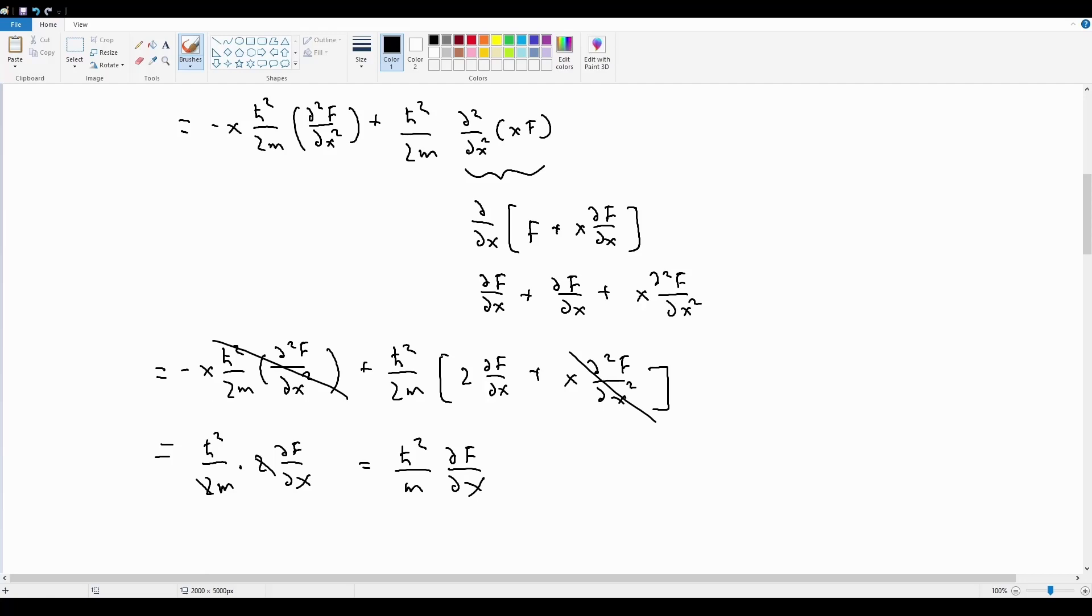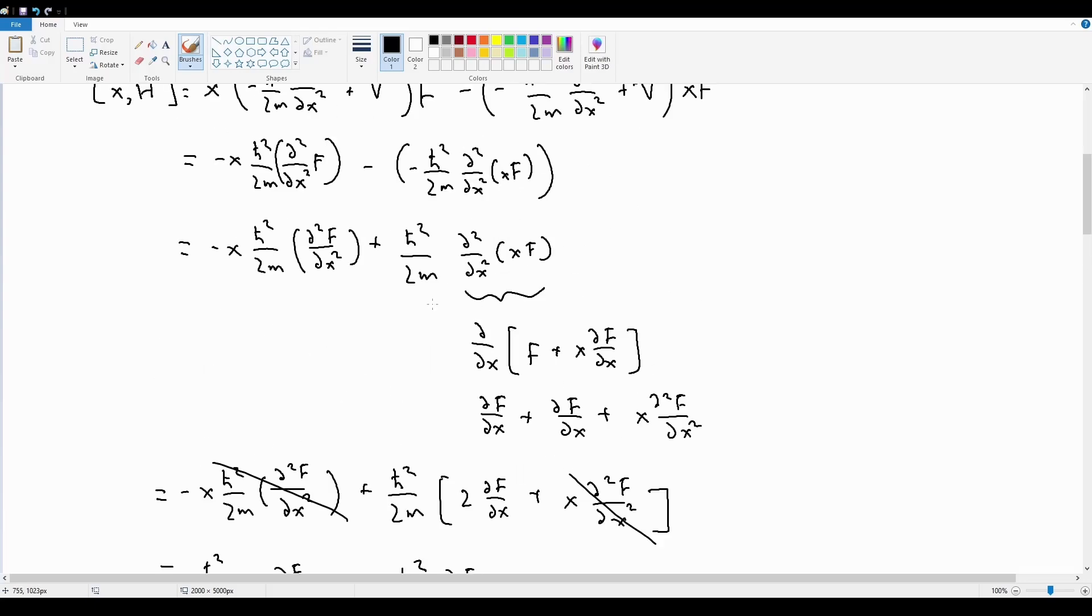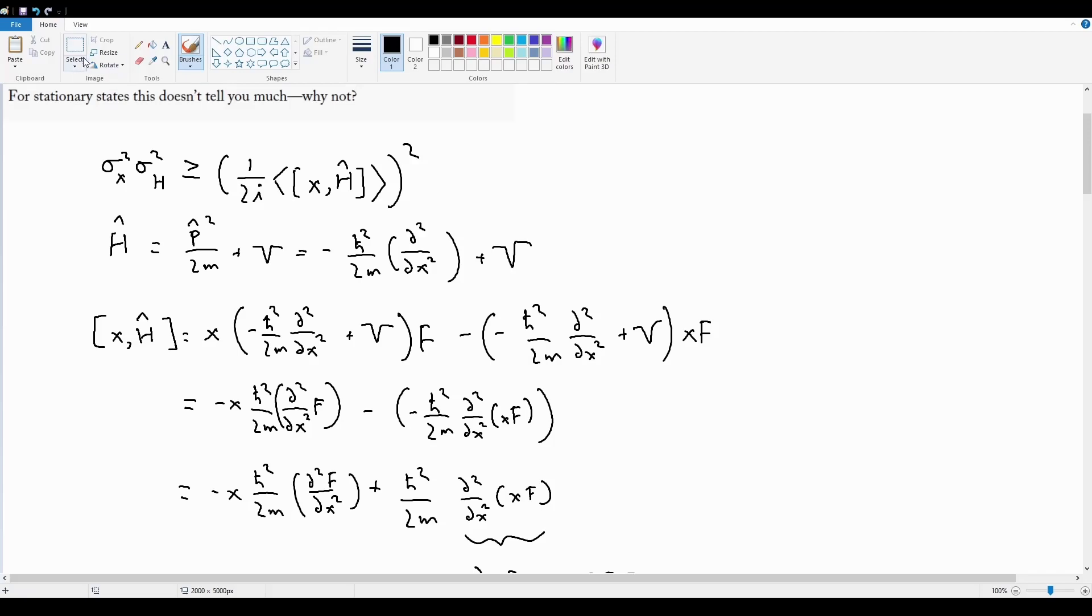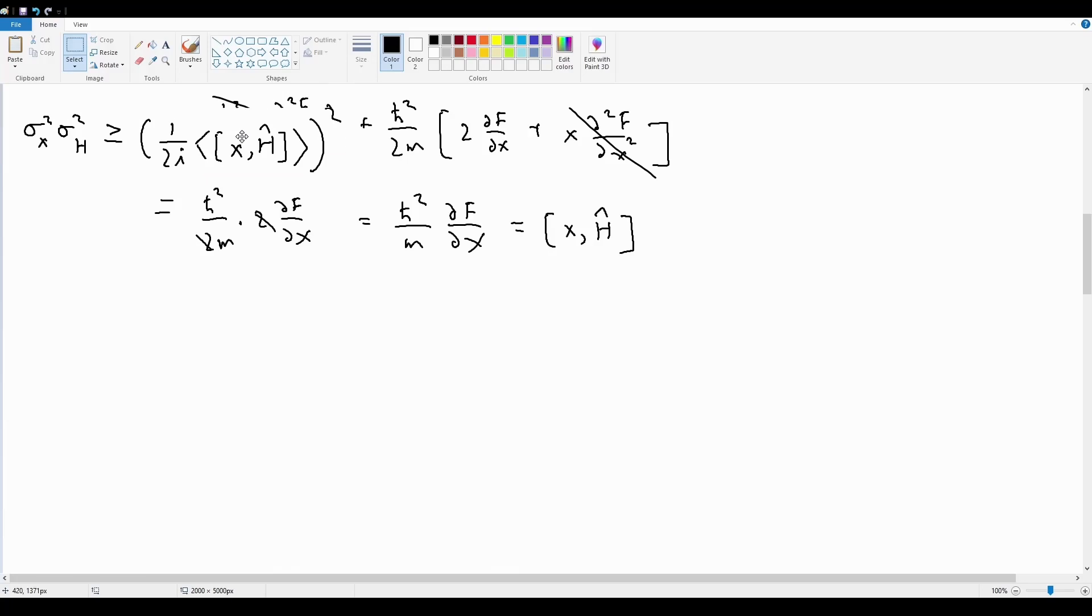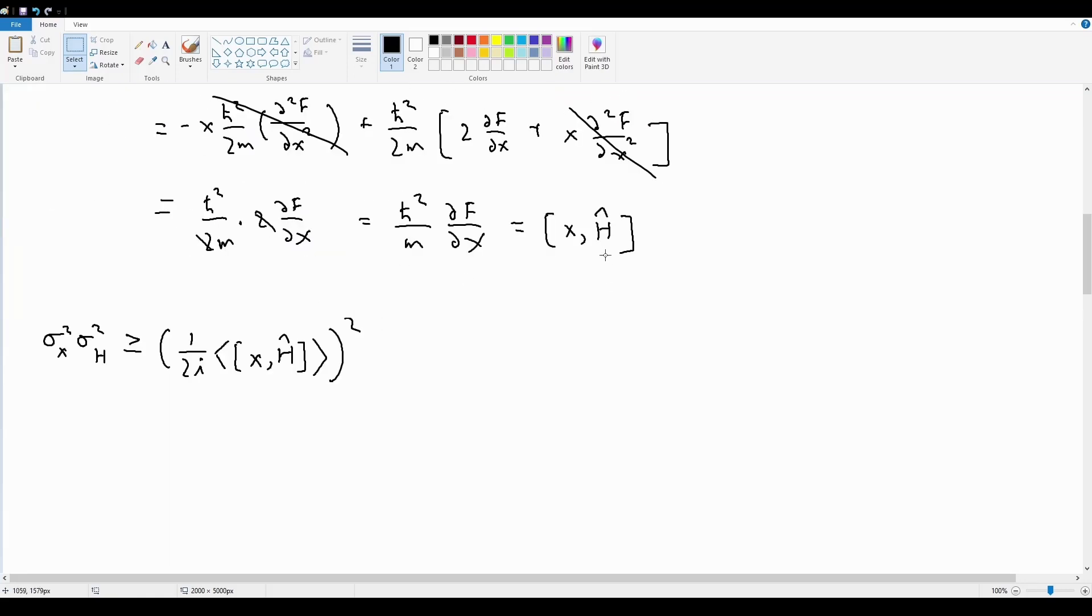Now we can shove this back in, because this is going to equal the commutator of x and H-hat. So if we shove that back in up here in this equation, which I'm going to pull back down, then we should get our answer. But note here that they want our answer in terms of momentum, not in terms of position.